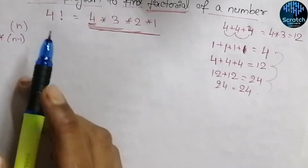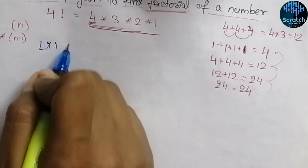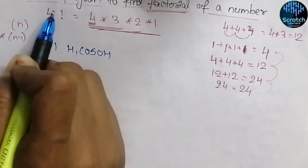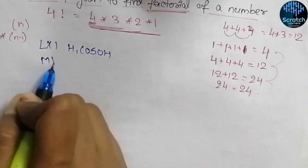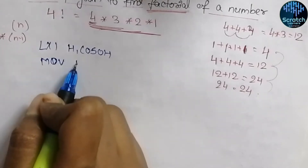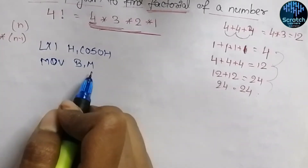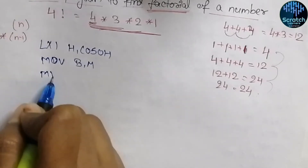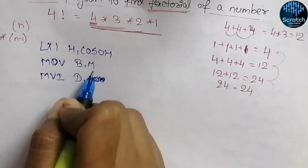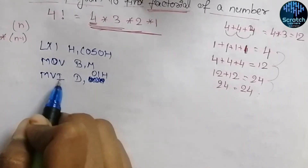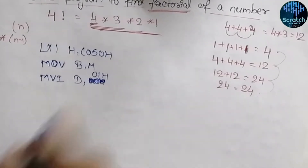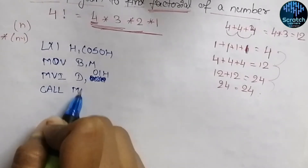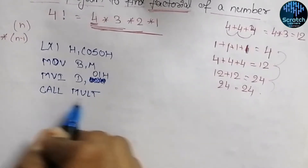First we input the number whose factorial we need. We use LXI H with address C050H to load the memory address, then MOV B,M to move the value four into register B. Then we initialize register D with 01H using MVI D, 01H. Now we call the multiplication subroutine block.